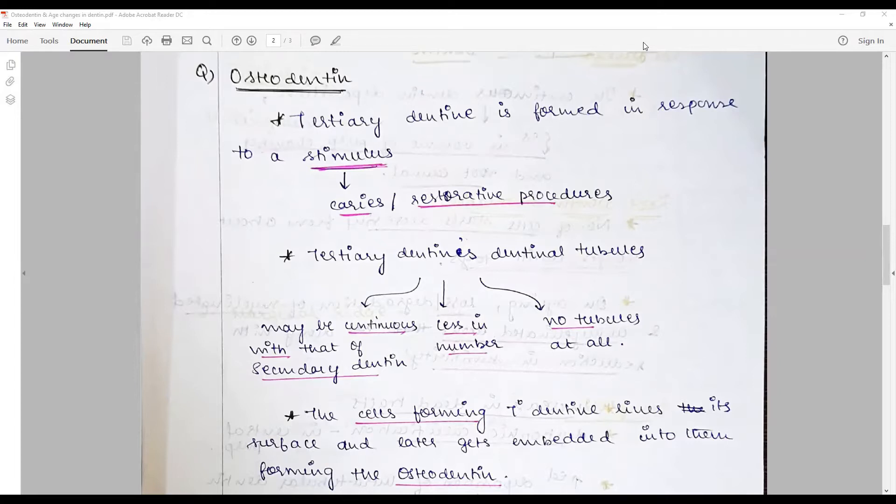Osteodentine: the first point is it is a type of tertiary dentine. It is formed in response to a noxious stimulus such as dental caries, restorative procedures, or even trauma.